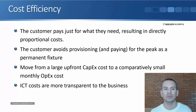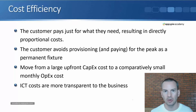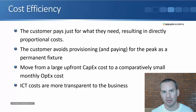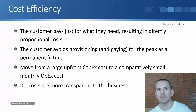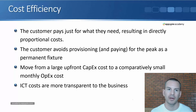We move from a large upfront CapEx cost to a comparatively small monthly OpEx cost. With a traditional on-premise solution, you have to pay for all that equipment as an upfront cost. But with cloud services, you're not buying the equipment yourself — you're using the service provider's equipment and paying for that as an ongoing monthly OpEx cost. This also makes the ICT costs more transparent to the business.